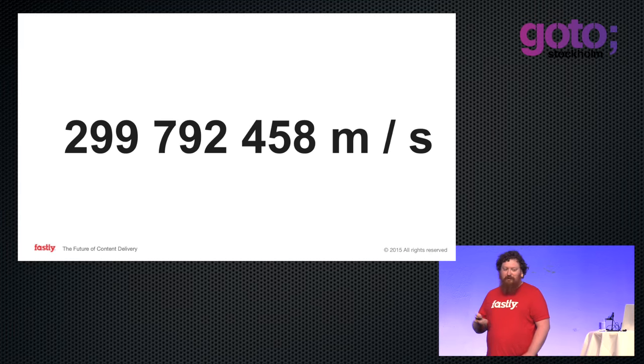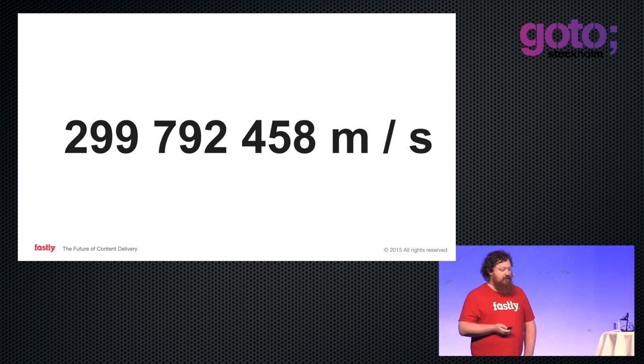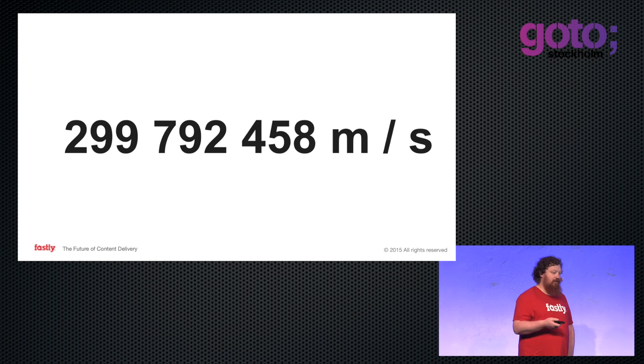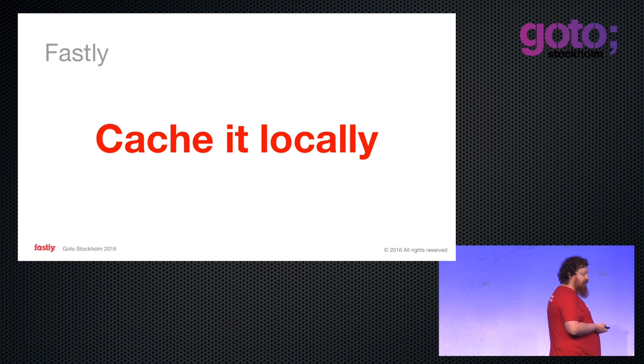Fundamentally, what CDNs help you with is latency you can't solve otherwise, which is speed of light. No matter how hard you try, it's going to take give or take 200 milliseconds for something from Europe to reach Australia — it's two-thirds of that in fiber, plus fiber doesn't actually follow the shortest path. So no matter how clever your code is, fundamentally you have to deal with that difference. So you cache it locally.